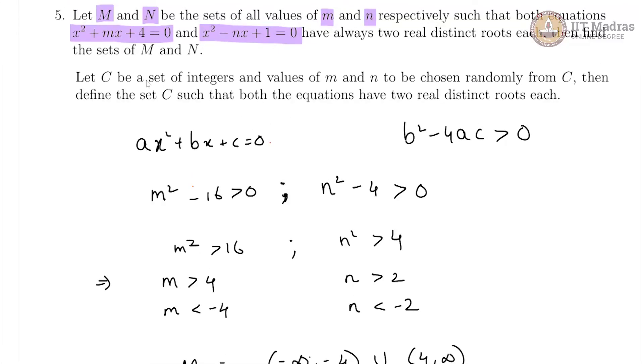Now in the next part of the question C is a set of integers and values of M and N are to be chosen randomly from C then define the set C such that both equations have two distinct real roots each.